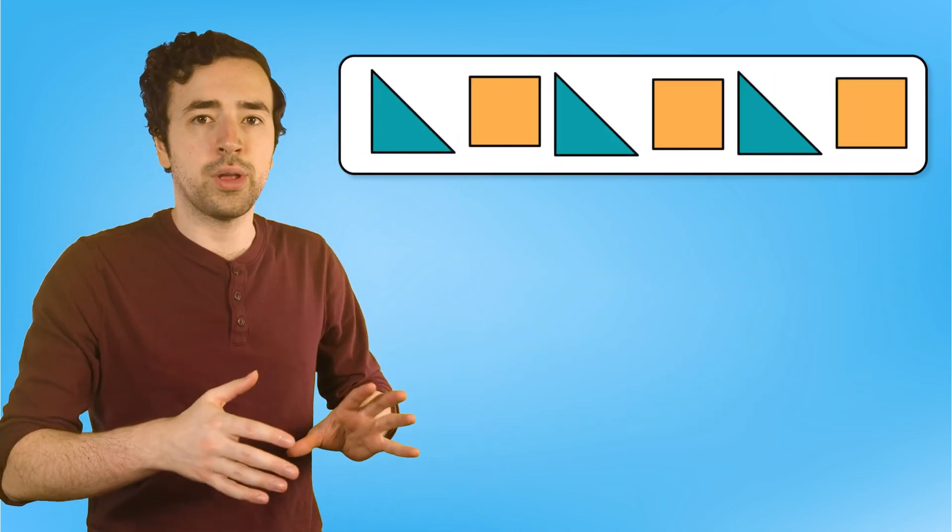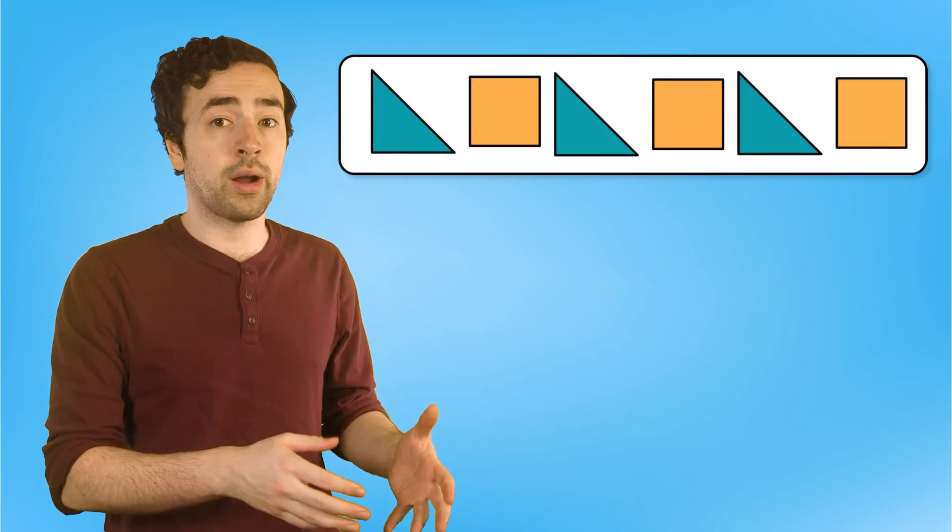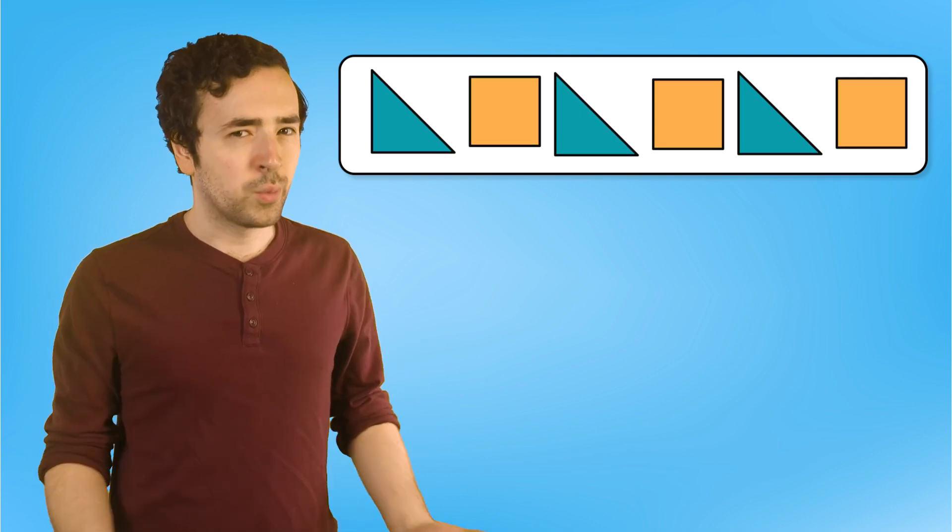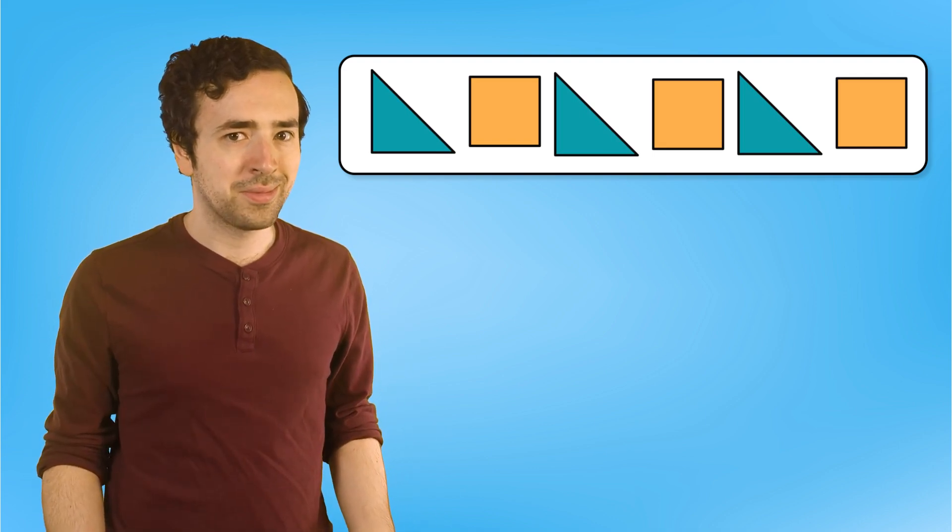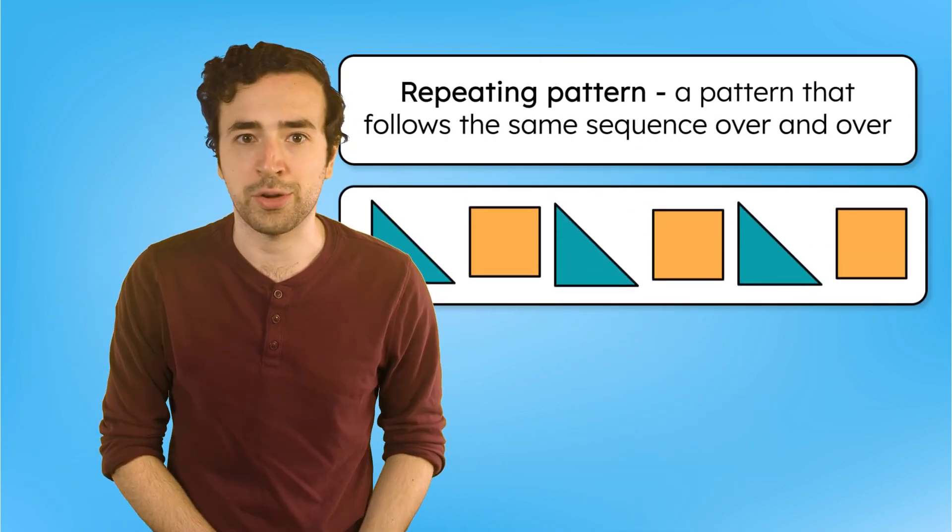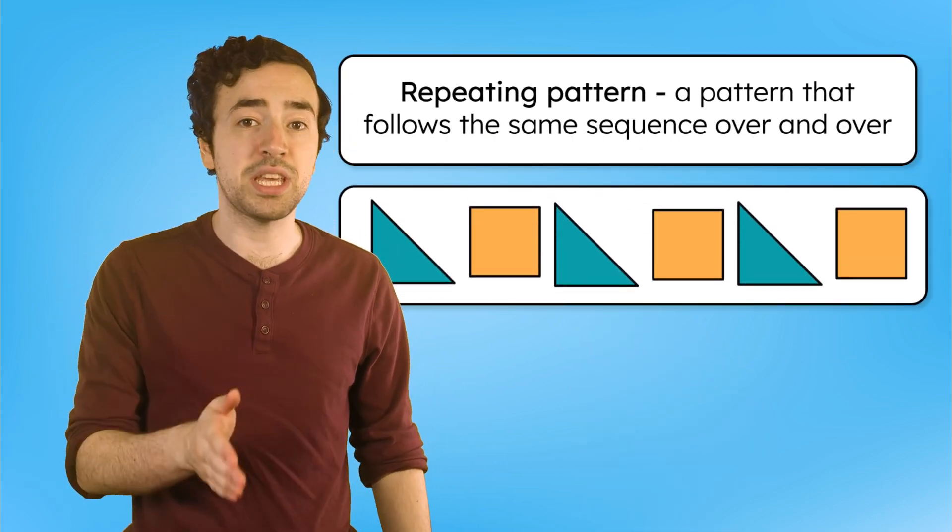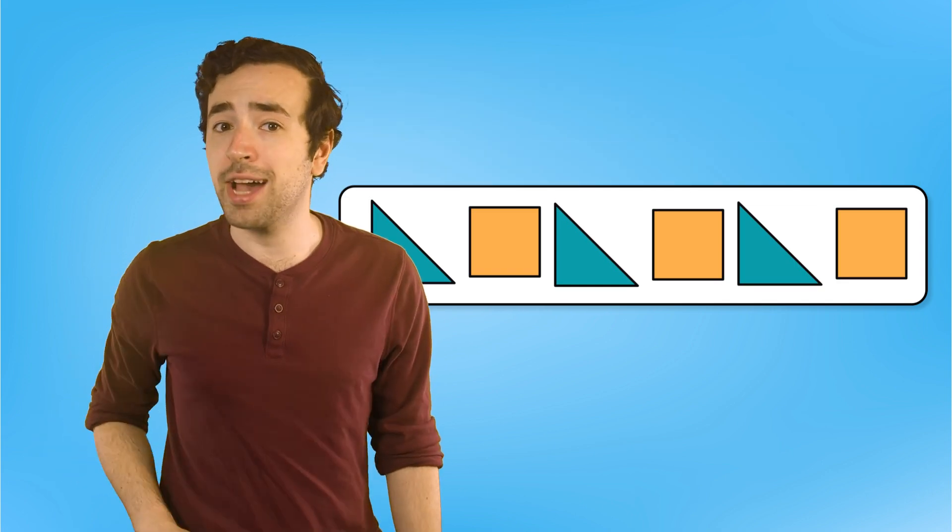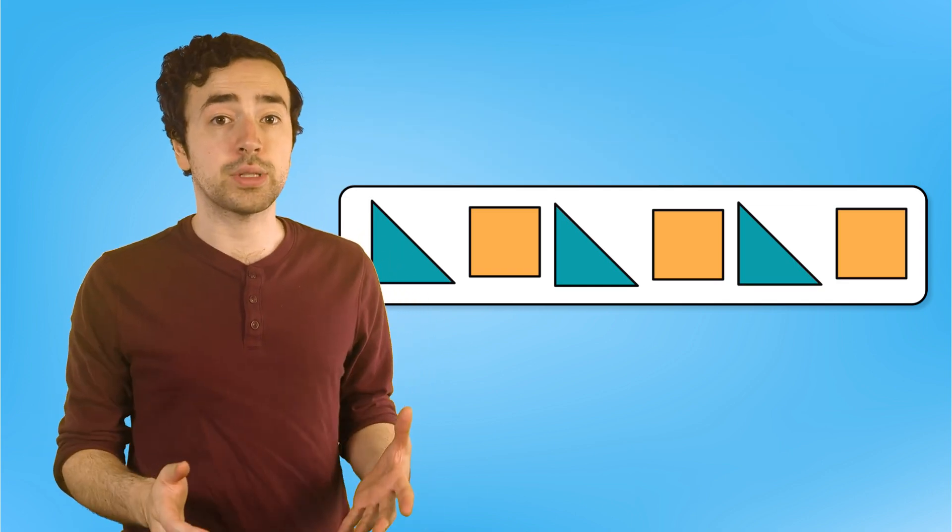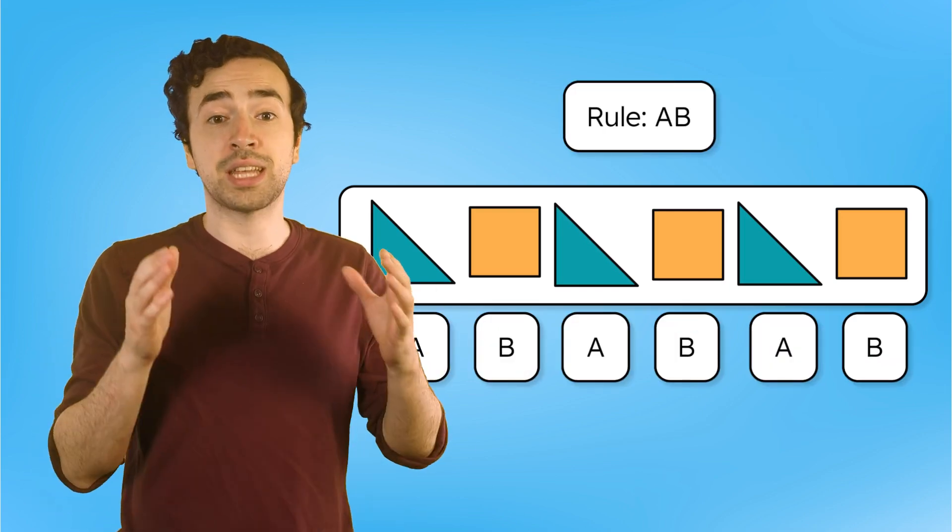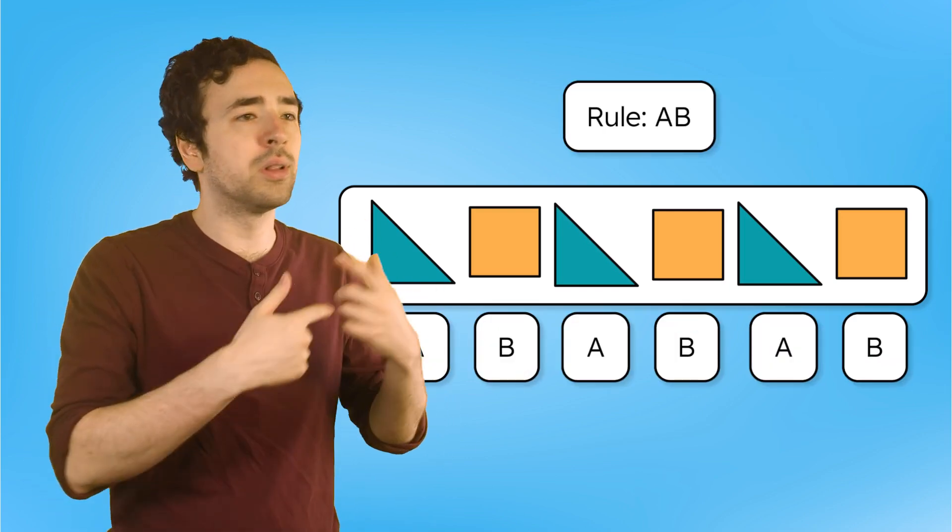So this pattern goes triangle, square, triangle, square, triangle, square. What do you think comes next? A triangle! This is a repeating pattern, which means it follows the same sequence over and over. To describe how a pattern repeats, we use letters. So this rule could be described as AB, because the same two shapes cycle again and again.